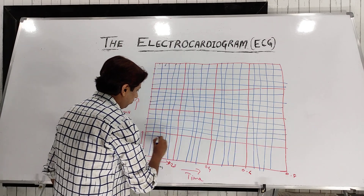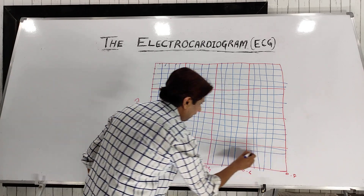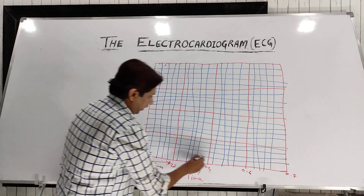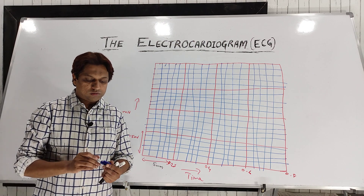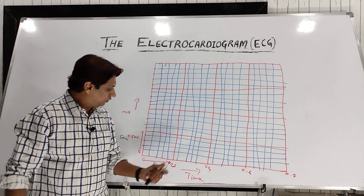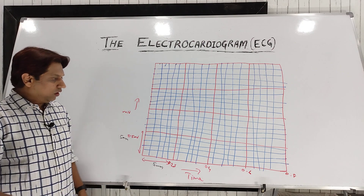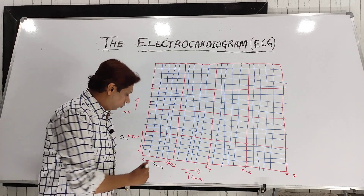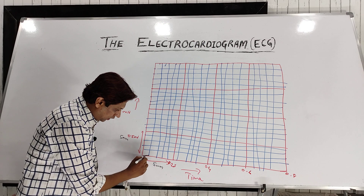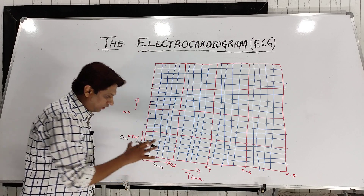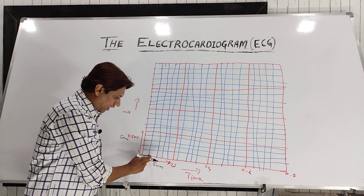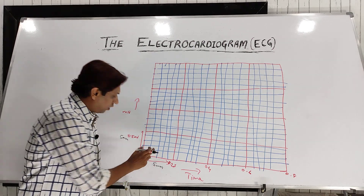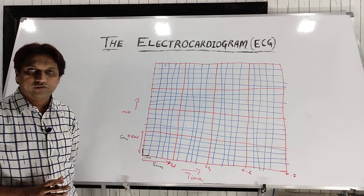Now we need to understand the dimensions of this smaller square. Generally, this smaller square is equal to 1 millimeter — that is, the bigger square is 5 millimeters, divided into 5 parts, so each small square is 1 millimeter in both the vertical height and horizontal direction, on both the x-axis and y-axis.